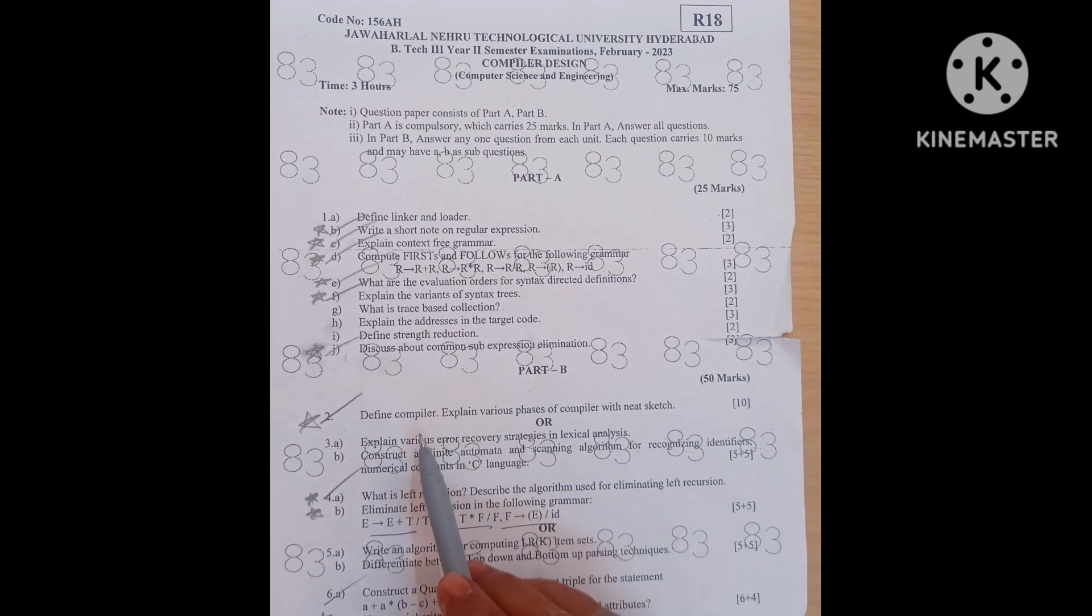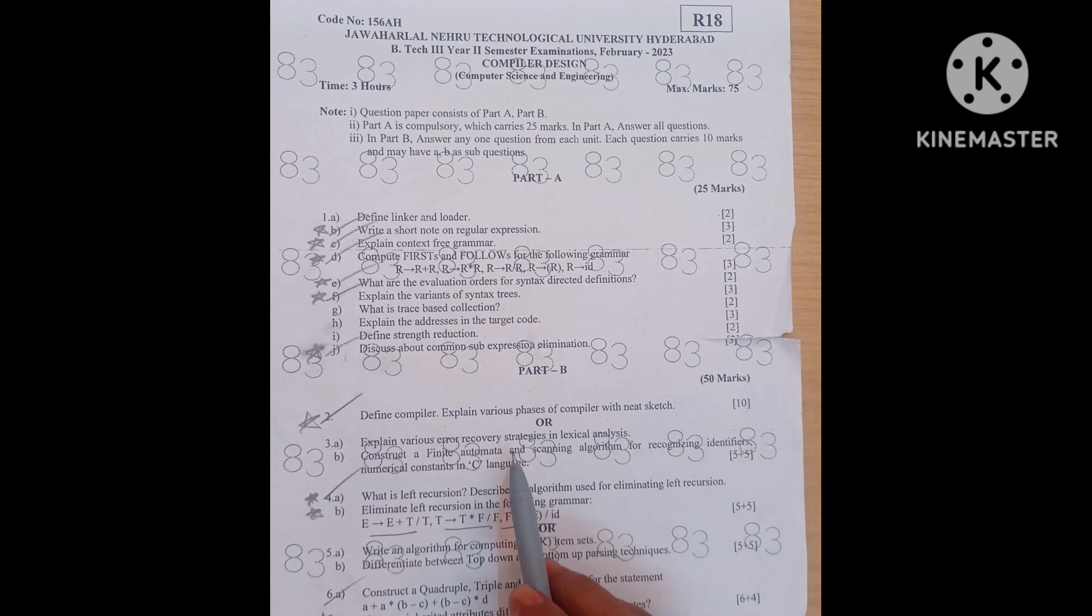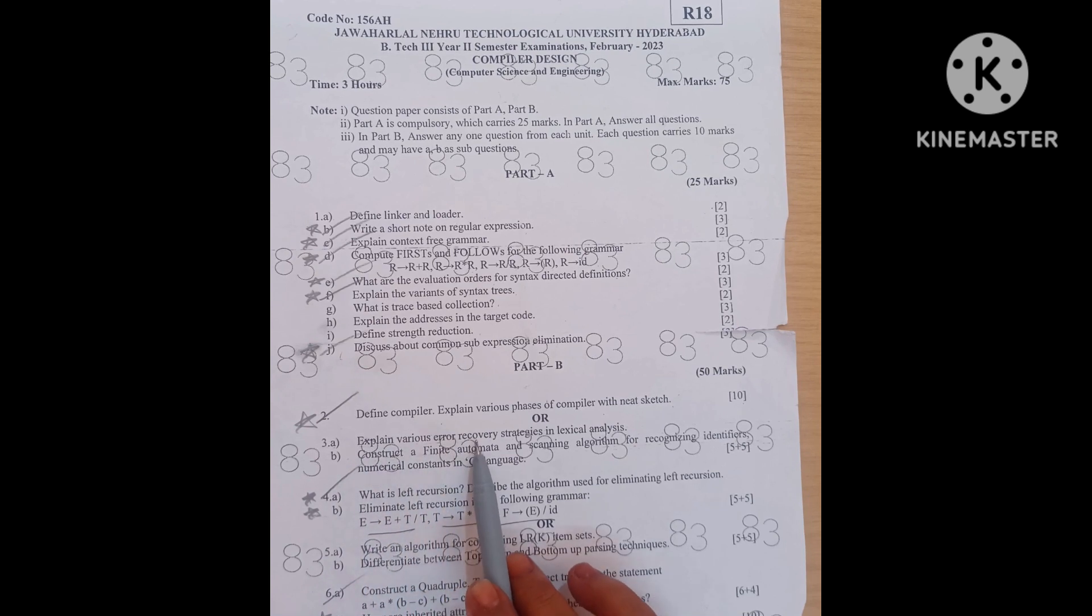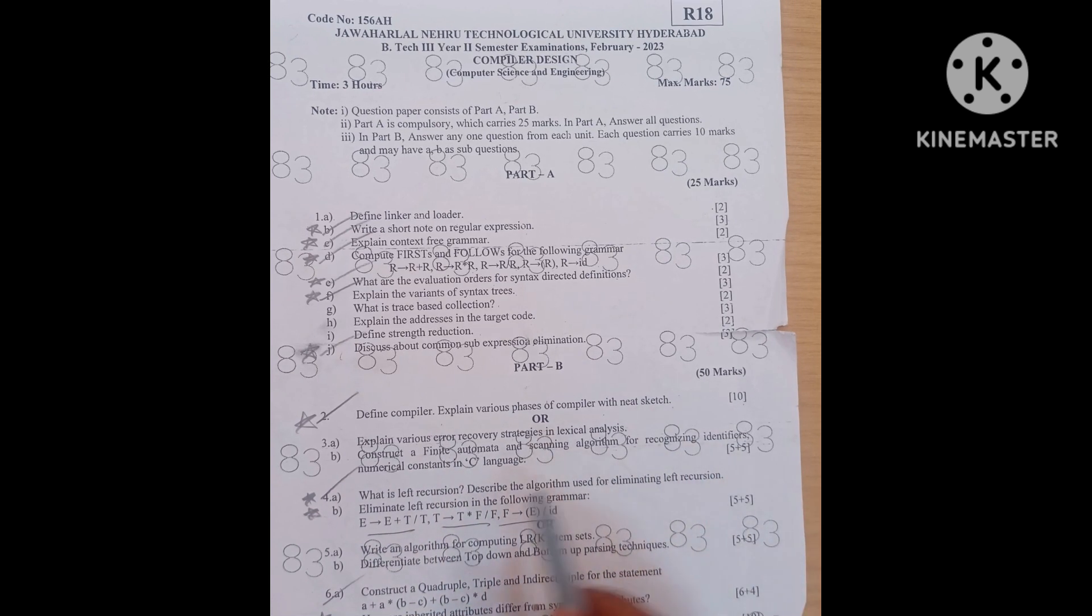Then Part B unit 1, define compiler, explain various phases of compiler with a neat sketch, direct question 10 marks. Internal choice is again divided into 2 parts A and B. A question is explain various error recovery strategies in lexical analysis, 5 marks question. And B is construct a finite automata and scanning algorithm for recognizing identifiers and numerical constants in C language, 5 marks question. These two are from unit 1.